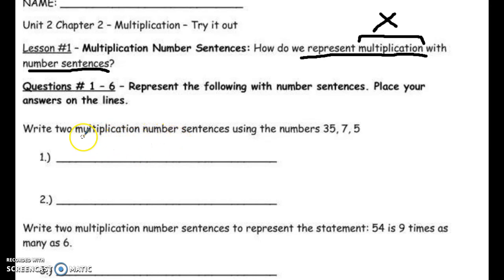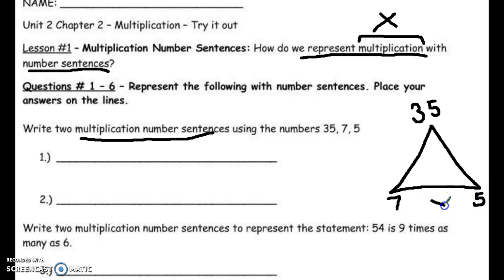Write two multiplication number sentences using the numbers 35, 7, and 5. What we tried to help the students recognize is that 35, 7, and 5 are a fact family. The reason they're a fact family is because typically combining two of the numbers will get you the third number as an answer. This is normally a third grade skill that students have mastered. You place the two smaller numbers on the bottom of the triangle with a multiplication symbol to help you realize that 7 times 5 is 35 and 5 times 7 is 35. There's two multiplication number sentences right there.